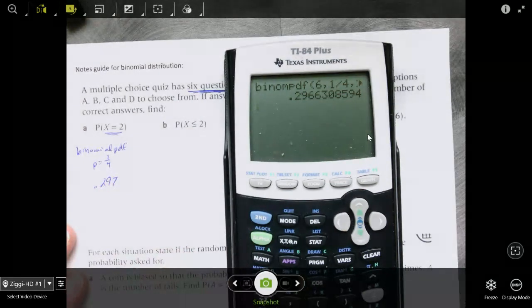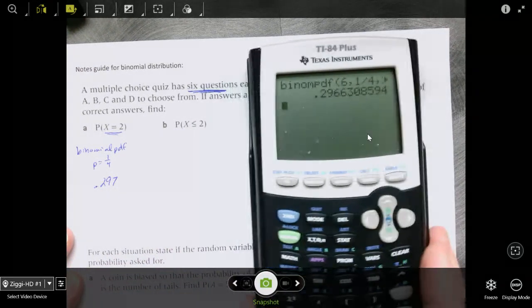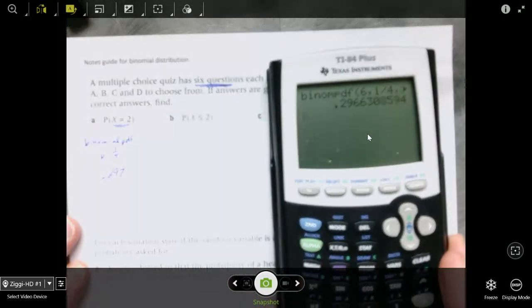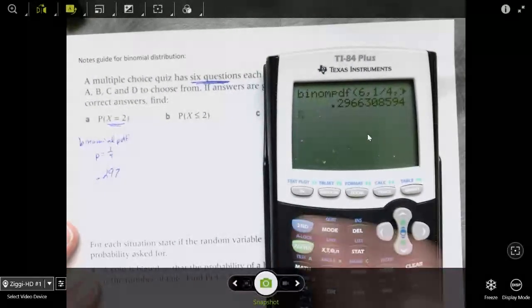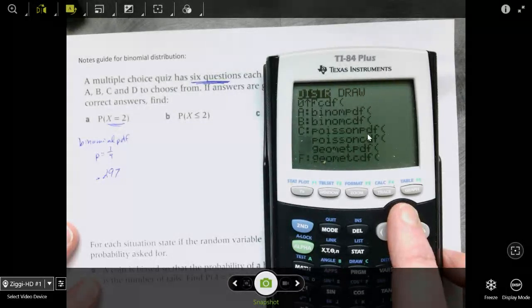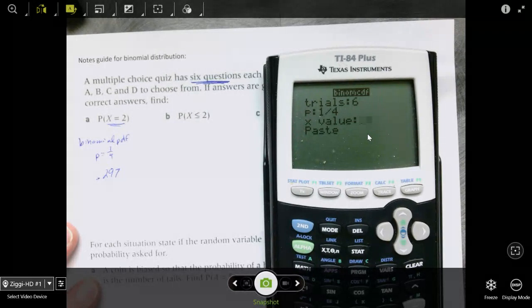So if you note here the difference between x is less than or equal to and x equals is which function you're going to use. So for the x is less than or equal to 2, we're going to do the cumulative density function. And things will look the same, 6, and it's still probability of 1 fourth. And this time x is 2 is going to do x is 2, x is 1, and x is 0 and add them together for you.